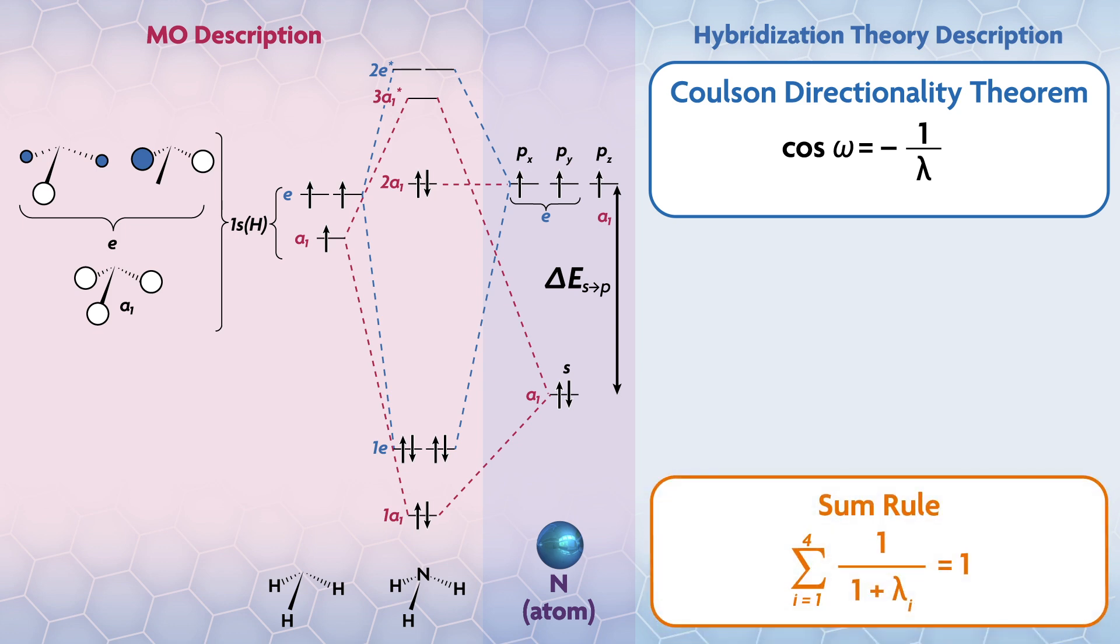The other equation we'll need is the sum rule. If we take all the hybrids on an atom and sum all the s contributions to each hybrid, there must be one total valence s orbital in there somewhere. So for all the i-th hybrids in an atom, there's one s, which can be written mathematically like this.